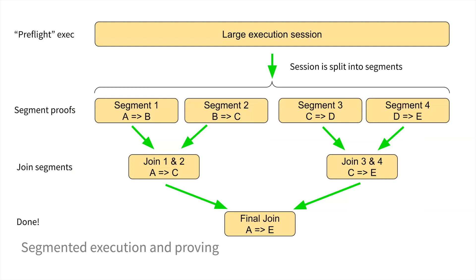If we say that A and B are both image IDs, what we want to do is prove that when segment two starts, we expect the starting image ID to be whatever the result of segment one was, and it's going to produce a new image ID.